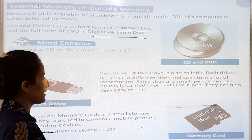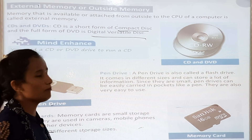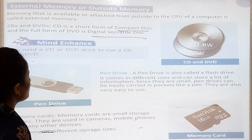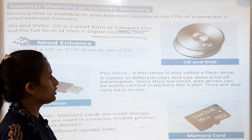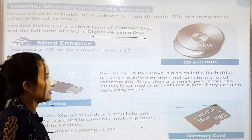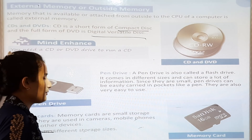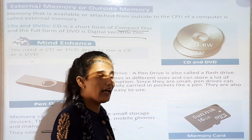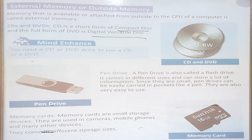Now, what is a pen drive? A pen drive is also called a flash drive. It comes in different sizes and can store a lot of information. Since pen drives are small, they can be easily carried in a pocket, just like a pen. They are also very easy to use and you can carry them anywhere.